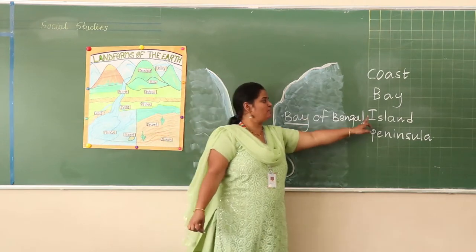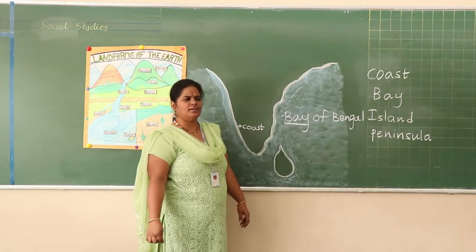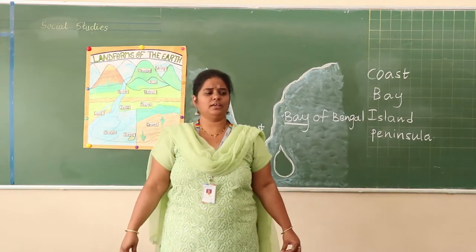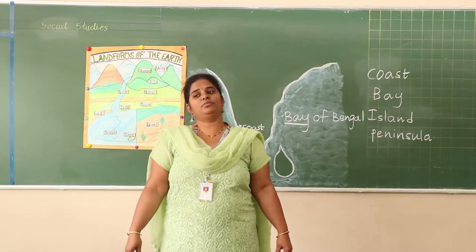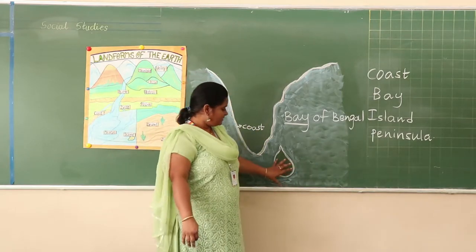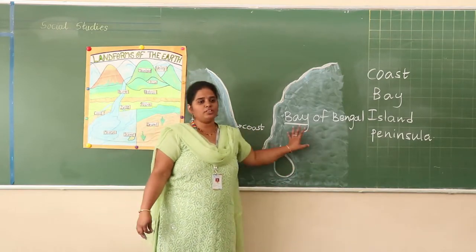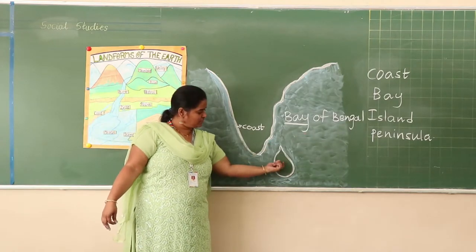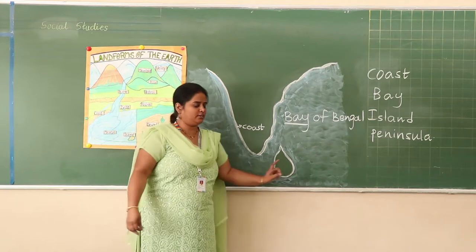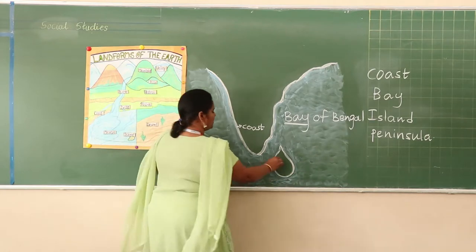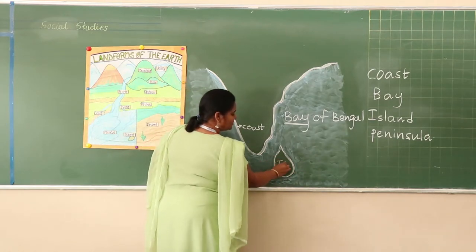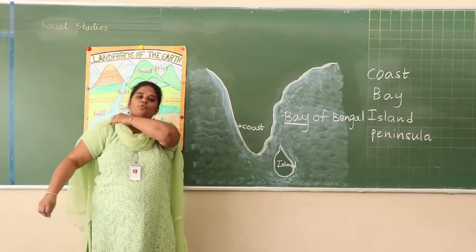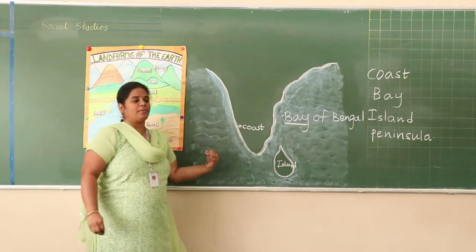Now we will come to know about island. Maybe you all have visited islands, right? The landmass which is surrounded with four sides of water is called an island. So we have the Andaman and Nicobar Islands and the Lakshadweep Islands.